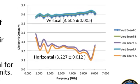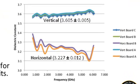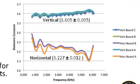We've also measured RO4350B, which is a much more high-end material with much lower loss and less dispersion, but it too is anisotropic. The vertical permittivity is 3.605 and the horizontal is 3.227 — pretty different values as well. So even with a high-end material, we still need to be concerned about anisotropy.